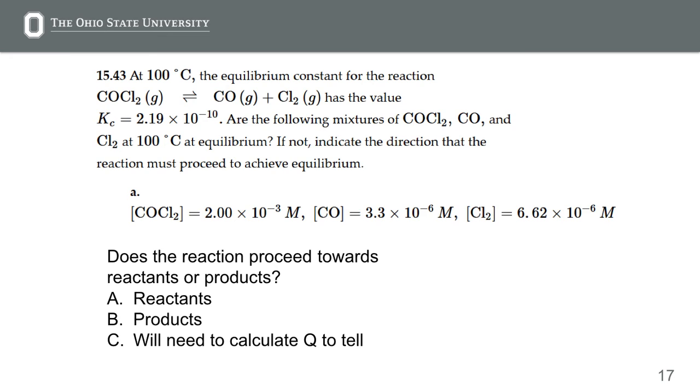So, let's do a couple things before we solve anything. Looking at K, is this reaction reactant favored or product favored? Reactant favored, why? K is small, exactly. We have a small value of K, times 10 to the minus 10. So we should have a reactant favored equilibrium.